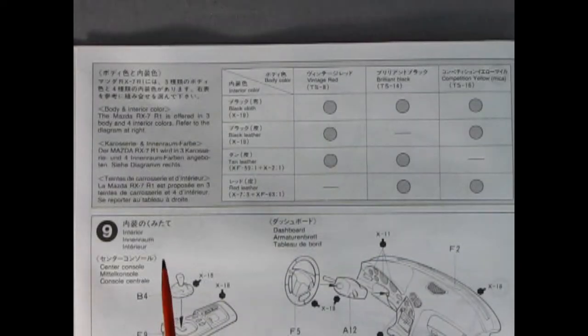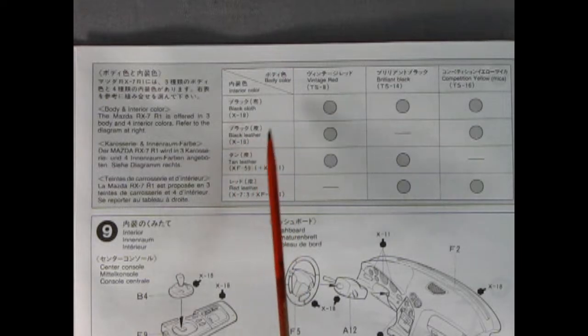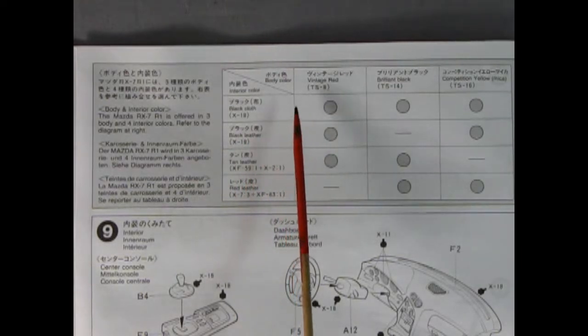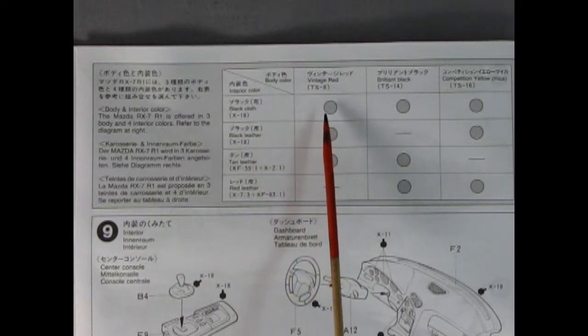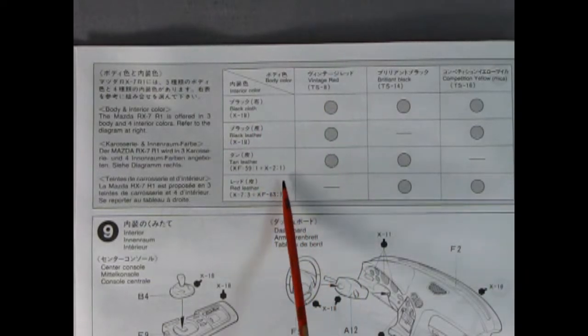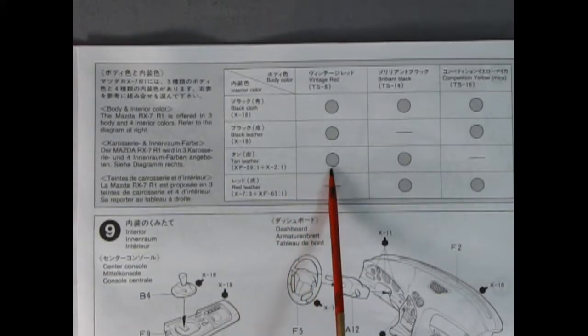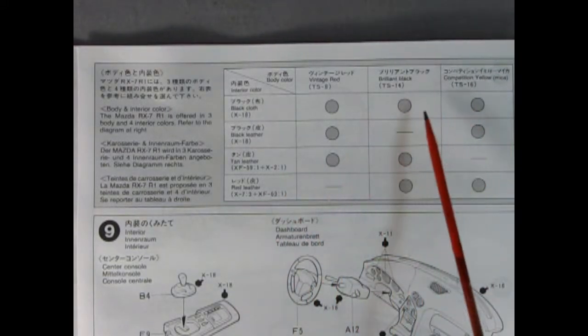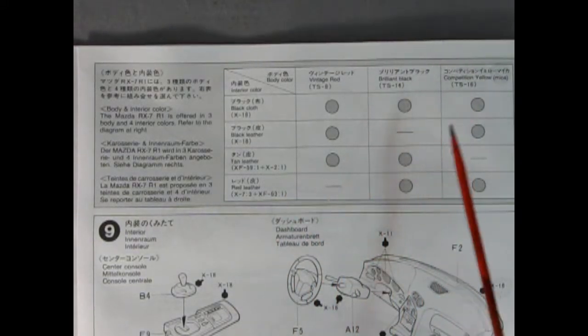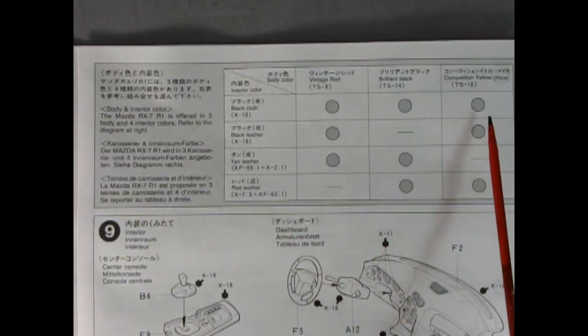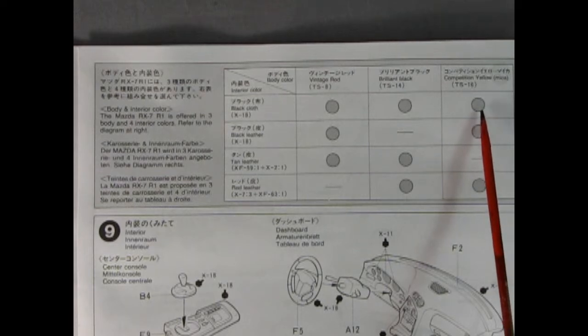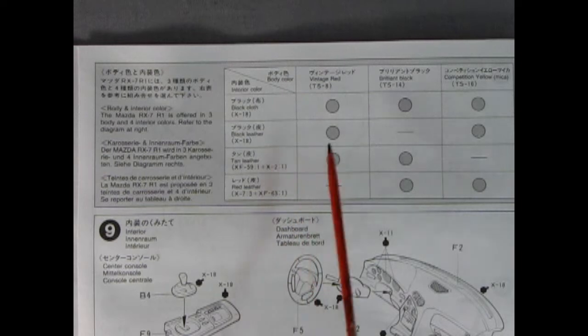Now I like this panel because this has our interior and body colors and just how they linked up on the real cars. So for example you could paint your model vintage red and put in the black cloth upholstery or black leather or even tan leather inside there. If you're building the model black you use black cloth, tan or even a red leather. And then if you're doing your car in competition yellow you get the black cloth, the black leather and the red leather. So again really cool stuff.